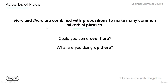Note that 'here' and 'there' are combined with prepositions to make many common adverbial phrases. Have a look at the examples below. 'Could you come over here?' — 'over' is a preposition and 'here' is the adverb; together they make an adverbial phrase. 'What are you doing up there?' — again, 'up' is a preposition and 'there' is the adverb of place.